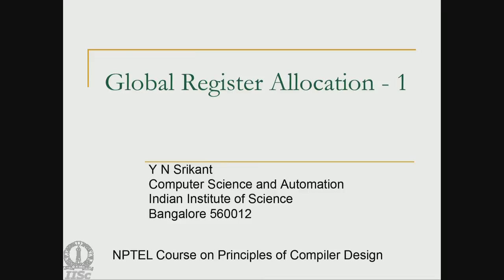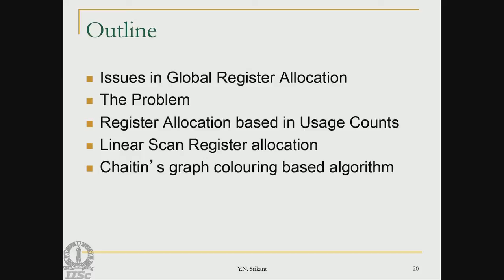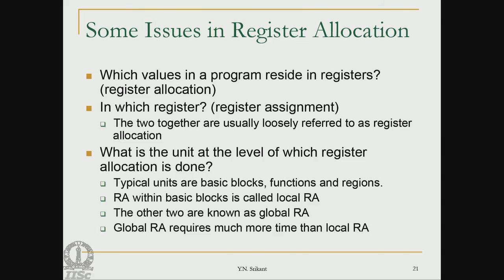Now let us move on to a new topic: global register allocation. In global register allocation we must understand why it is required, define the problem properly, and then study three methods in increasing order of complexity: usage counts, linear scan register allocator, and graph coloring.